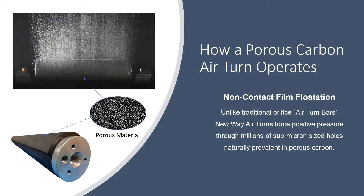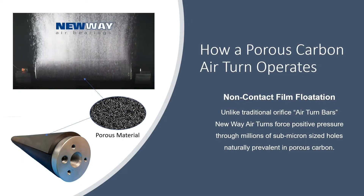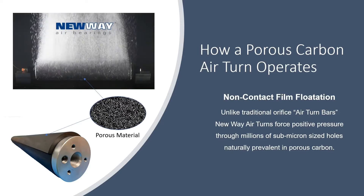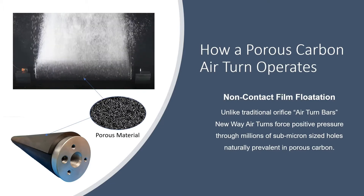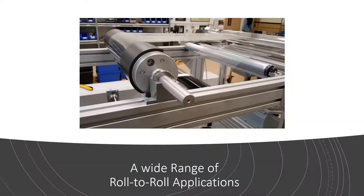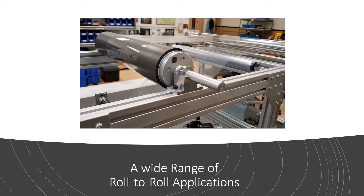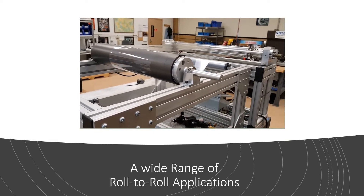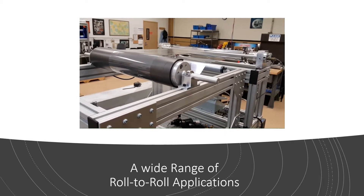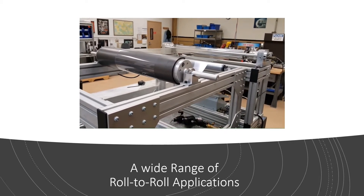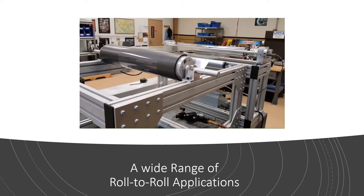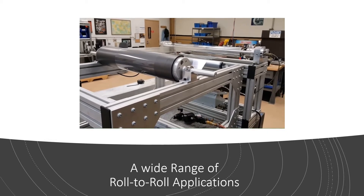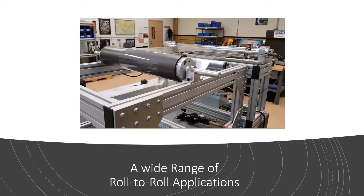Unlike the high airflow of traditional air bars, New Way creates a thin film of high-pressure air on the surface of the air turn by forcing air through the millions of submicron pores naturally occurring in the material. This innovative application of porous media air bearing technology allows films and webs to move over static rollers in a non-contact and frictionless manner.